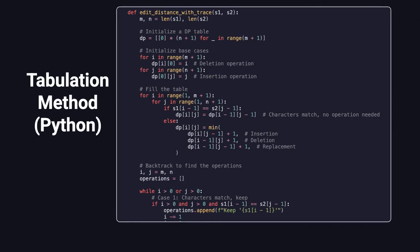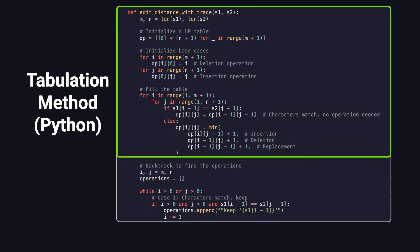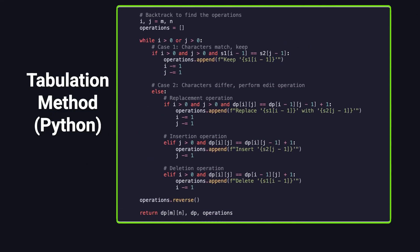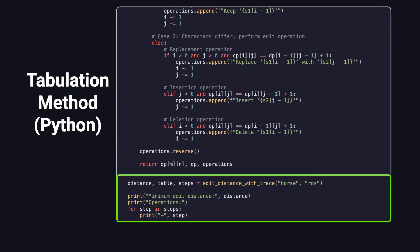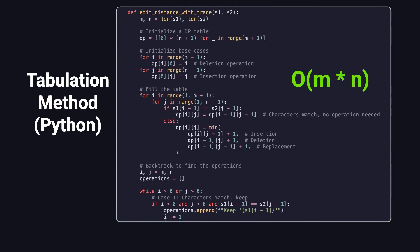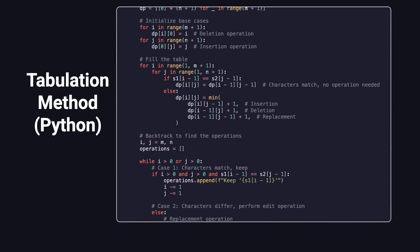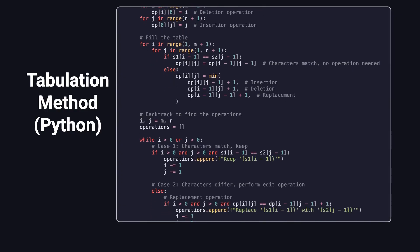Here's the full Python implementation using the tabulation method. It has three parts: first, the DP table computation to find the minimum edit distance; then, the backtracking logic to reconstruct the sequence of operations; and finally, an example showing how to call the function and print the results. The time and space complexity are both O(M × N), where M and N are the lengths of the two strings. Pause the video and walk through the code line by line to really understand how the algorithm works.